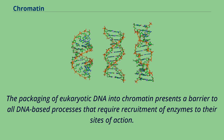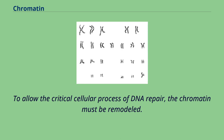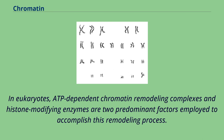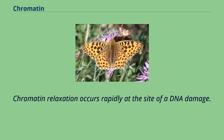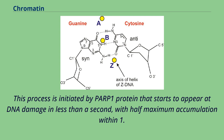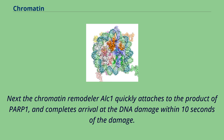The packaging of eukaryotic DNA into chromatin presents a barrier to all DNA-based processes that require recruitment of enzymes to their sites of action. To allow the critical cellular process of DNA repair, the chromatin must be remodeled. In eukaryotes, ATP-dependent chromatin remodeling complexes and histone-modifying enzymes are two predominant factors employed to accomplish this remodeling. Chromatin relaxation occurs rapidly at the site of DNA damage, initiated by PARP1 protein that starts to appear at DNA damage in less than a second, with half-maximum accumulation within 1.6 seconds. Next, the chromatin remodeler ALK1 quickly attaches to the product of PARP1 and completes arrival at the DNA damage within 10 seconds.